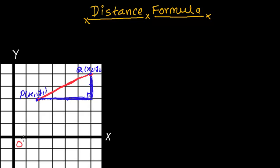We know that X1 represents the distance from the origin to this point — this length is represented by X1. And X2 represents the distance from the origin up to this point — this is X2. So the distance from here to here: I am just subtracting X1 from this whole X2. It will be X2 minus X1. So this distance is X2 minus X1.